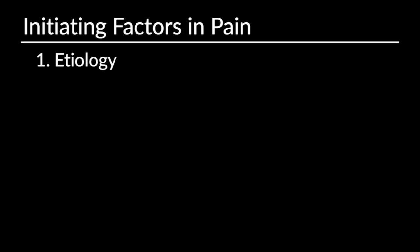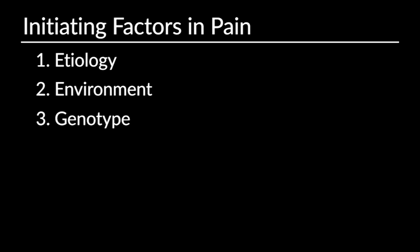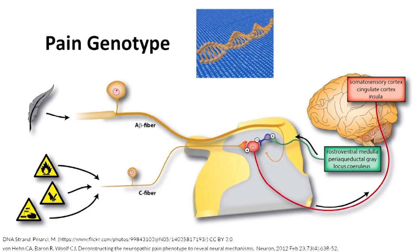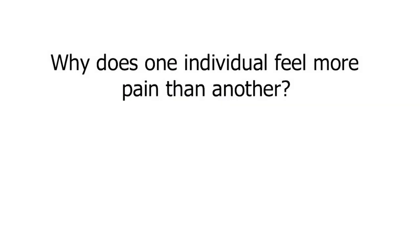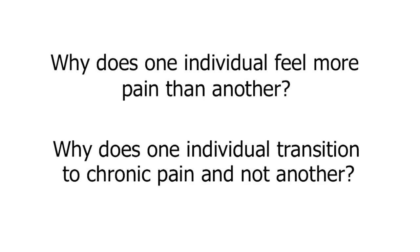I'd like to end by returning to one of the features I discussed at the beginning. Pain is initiated by three factors: etiological factors, environmental factors, and pain genotype. Pain genotype is an area of increasing interest and major research activity, as we appreciate the way in which genetic variations — the normal variations that each of us have — may drive the pain we experience. This leads us to ask: why does one individual feel more pain than another? And why does one individual transition to chronic pain and not another, even though both may have identical damage to their nervous system?